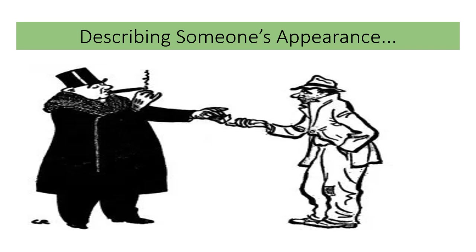Some of the adjectives you might have thought of are like untidy, poor, wealthy, rich. If I'm looking at the man on the left, you could say maybe posh, wealthy, rich, well-dressed, smart, aloof, arrogant. You can kind of see his personality as well.